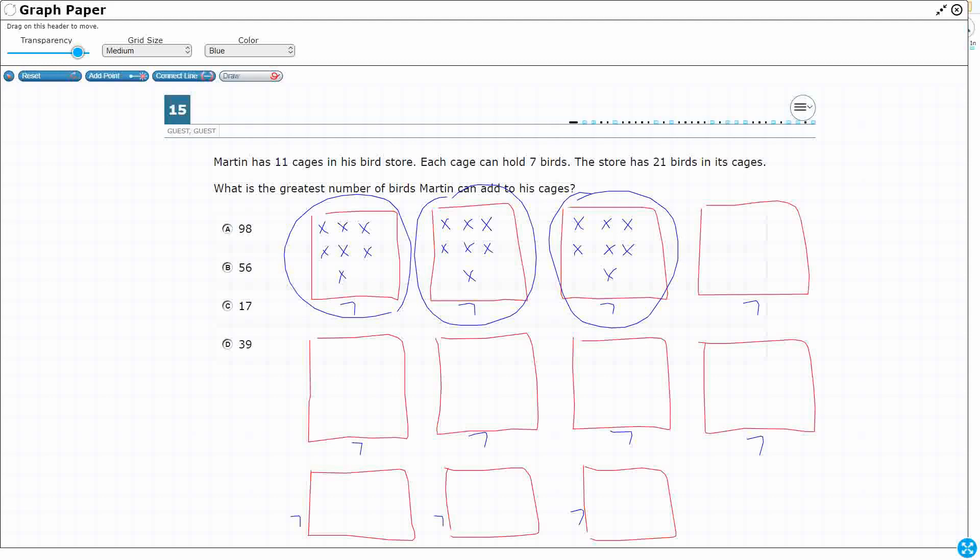So what is the greatest number of birds that Martin can add to his cages? Well, look, I've got empty cages. How many empty cages do I have? I've got 1, 2, 3, 4, 5, 6, 7, 8. I've got 8 empty cages.